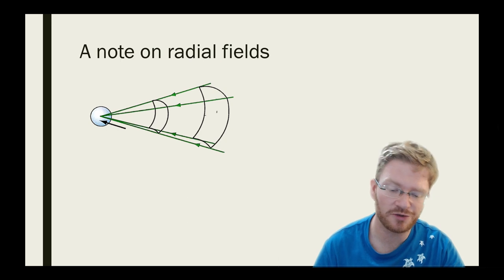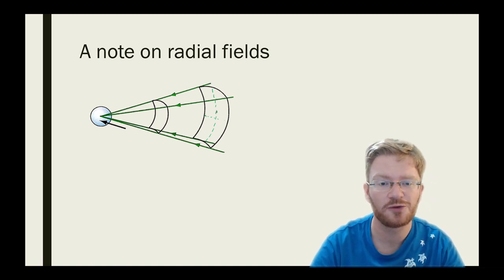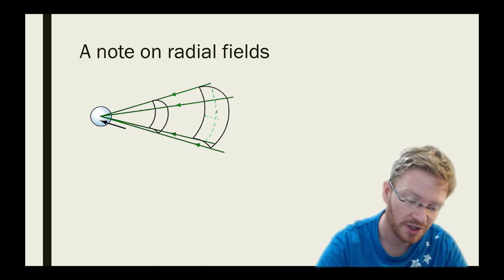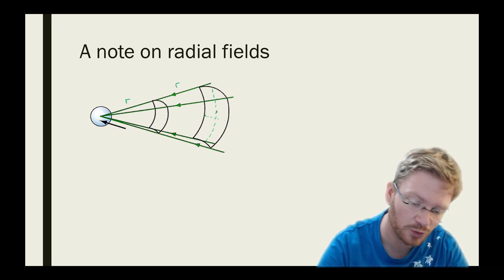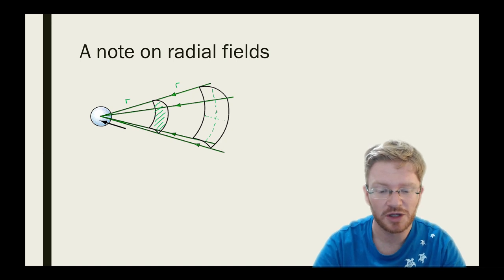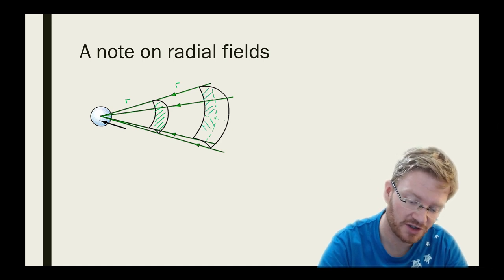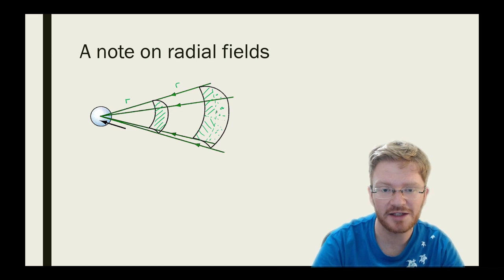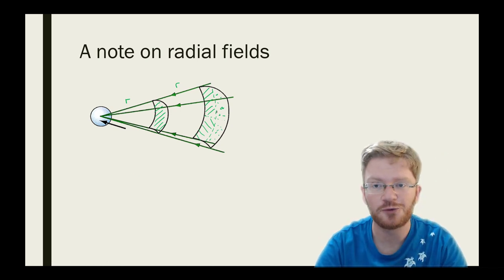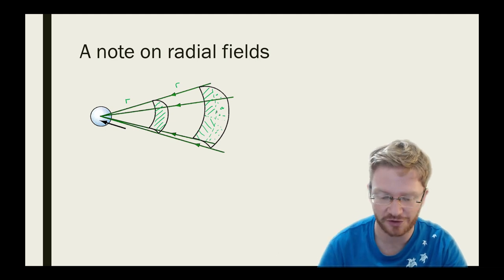One thing you might be interested in is why it's 1 over r squared. It makes sense when you think about spreading a force out over a distance. If I call this distance r, for one r of distance my field is spread out over an area I'll call 1. If I double my distance, I now have four times as many regions — that's how I get the r squared value. If I double the distance, I get the force spread out over four times as much space, so it's four times lower. It's a 1 over r squared relation rather than a 1 over r relation.